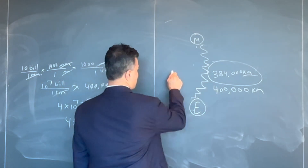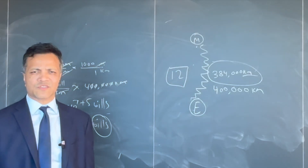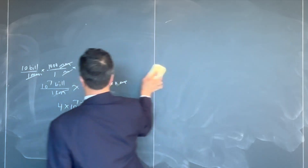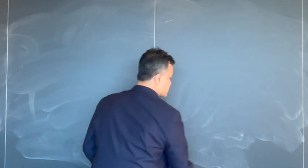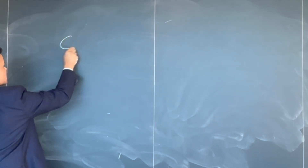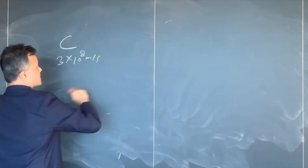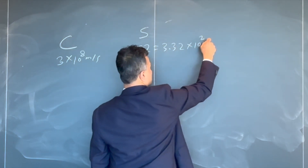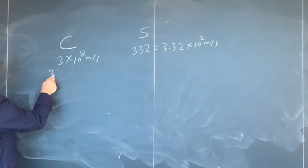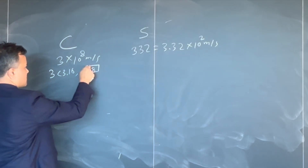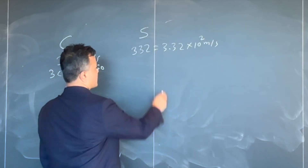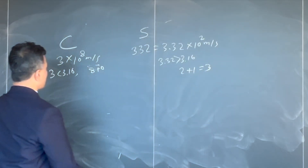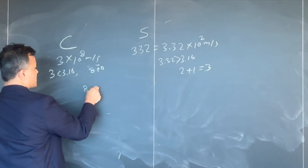The order of magnitude of that answer is 12. Finally, what is the difference in order of magnitude between the speed of light and the speed of sound? Speed of light: 3 times 10 raised to 8 m/s — since 3 is less than 3.16, order of magnitude is 8. Speed of sound: 332 m/s, which is 3.32 times 10 raised to 2 — since 3.32 is greater than 3.16, order of magnitude is 3. Difference: 8 minus 3 equals 5.